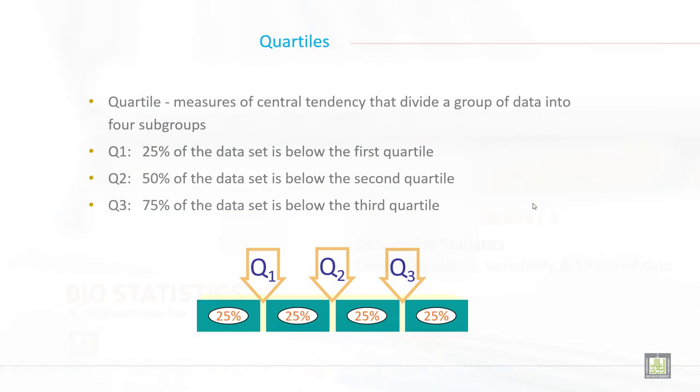Quartile means quarter, which is 25%. When you divide all data set into four equal parts, it is called quartile.